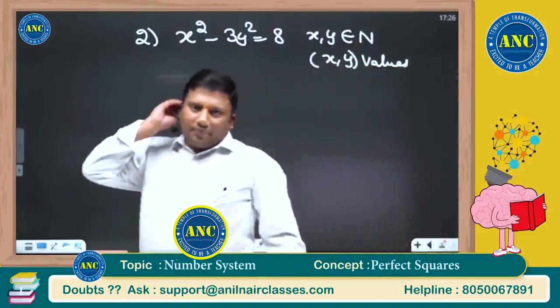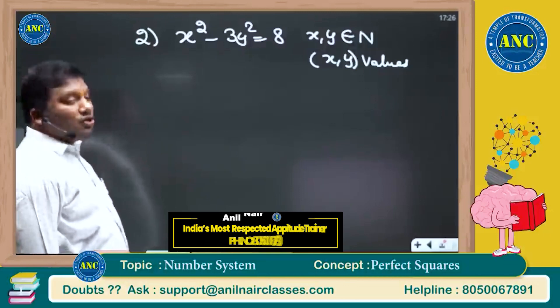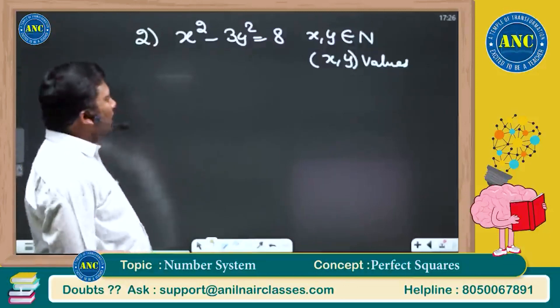Please write down the next question: x square minus 3y square equivalent to 8, x, y are natural numbers. How many values will x, y take?